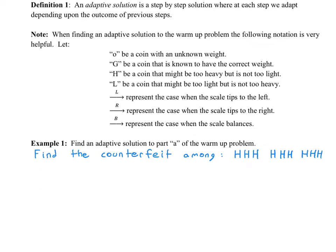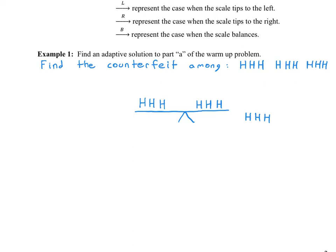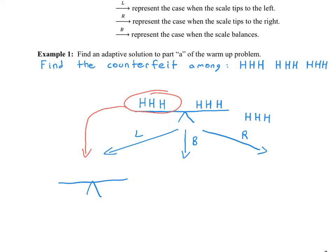When thinking about how to place these coins on the scale, a very logical approach that works really nicely is splitting the coins evenly among three groups: the left-hand side, the right-hand side, and off the scale. Now that we've split them up evenly, there are three things that can happen: the scale could tip to the left, it could balance, or it could tip to the right.